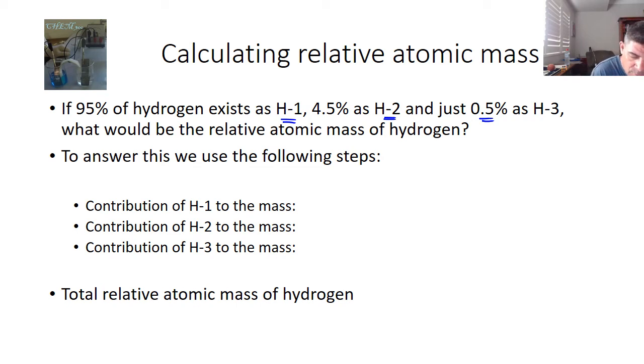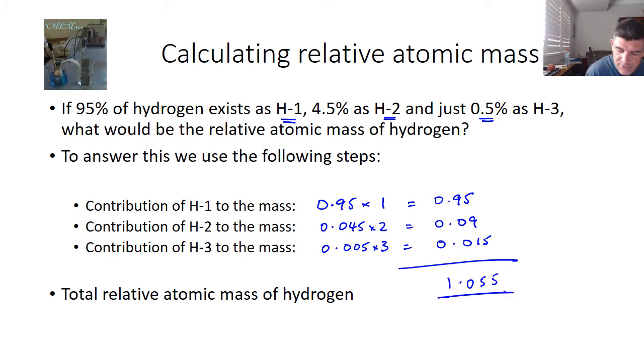Firstly, the contribution of H-1 to the mass is 0.95, it's 95% of its mass of 1, equals 0.95. The contribution of H-2 is only 0.045, but we're multiplying that by 2, so we get 0.09. And then 0.005 multiplied by 3 gives us 0.015. When we add these together, what we get is 1.055. So what we end up with is an atomic mass for hydrogen of 1.055 atomic mass units. And this would be your relative atomic mass of hydrogen.